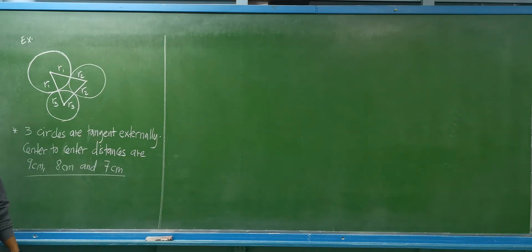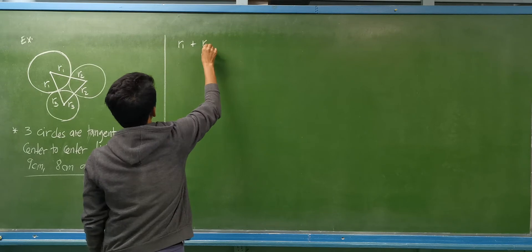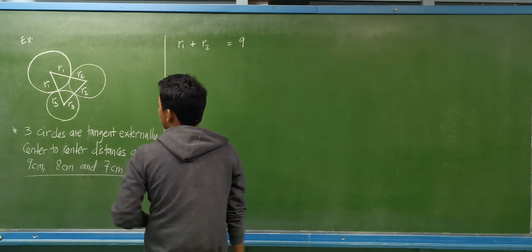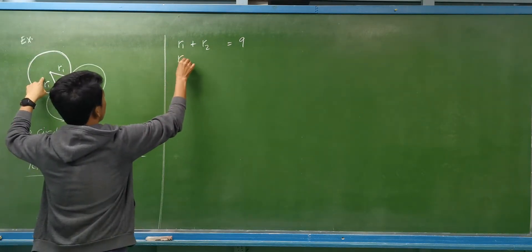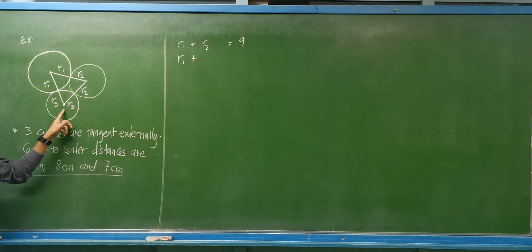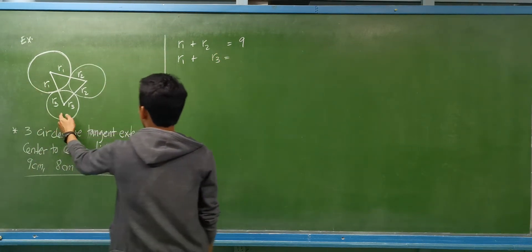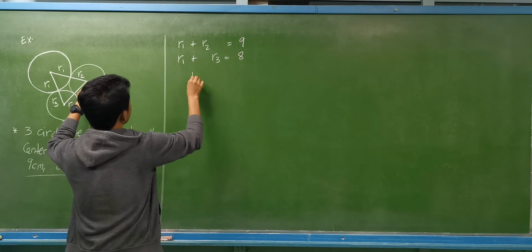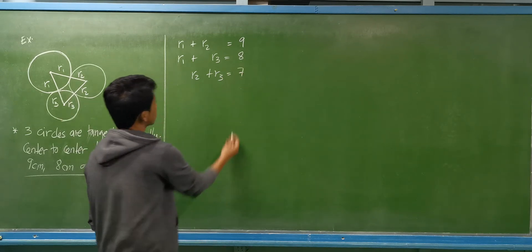First, we need to set up our equations. The largest circle R1 plus the medium circle R2 gives us the biggest sum, which is 9 centimeters. Then the largest circle R1 plus the smallest circle R3 gives us 8 centimeters. Finally, radius R2 plus radius R3 — the medium and smallest circles — gives us the smallest sum, which is 7.